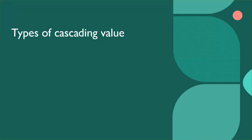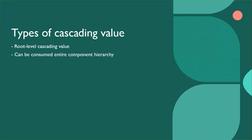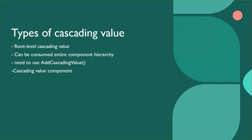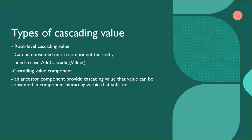Blazor supports two types of cascading values. The first type is root-level cascading values. We can register this type inside the program.cs file, and that value can be consumed in the entire component hierarchy using the addCascadingValue extension method of the service collection. The second type is the CascadingValue component, which we can define inside an ancestor component.